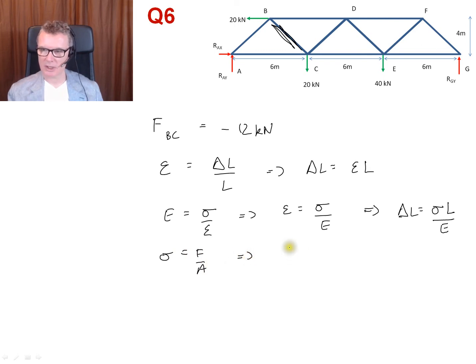So the change in length is going to be the force times the length of the bar divided by the area of the bar. The area is pi d squared over 4, times Young's modulus. That will give me the change in length.